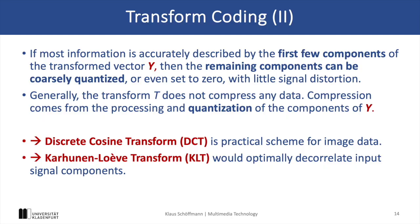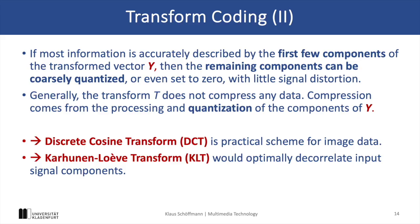Now if the majority of information in vector Y is concentrated in its first few components, the remaining components can be coarsely quantized or even set to zero with minimal distortion. The transform itself does not really compress the data, but the compression occurs through the quantization process, and this fact is heavily utilized by JPEG with the DCT, but also by other transform coding methods such as the Karhunen-Loève transform KLT or the fast Fourier transform FFT.